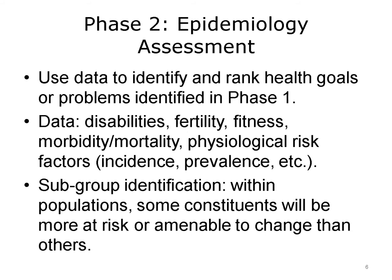You might then move into the EPI assessment, where you're going to start getting into hardcore types of data. Disability levels — we have something called activities of daily living, or ADLs, which is a measure of people's ability to function, and that's a very distinct epidemiology measure. Fertility is the number of children that women are having in a community. You may wish to reduce fertility because of unwanted pregnancies, or you may want to increase fertility in some other communities.